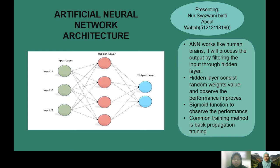For the ANN architecture, it consists of one input layer, one hidden layer, and one output layer. Each layer consists of several neurons, depending on how many input neurons are defined. ANN works like a human brain — it processes the output by filtering the input through the hidden layer, where each hidden layer has random weight values. A sigmoid function is used in the ANN architecture to observe the network's performance.